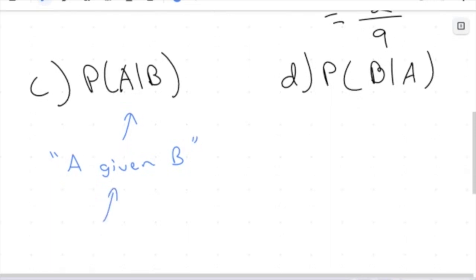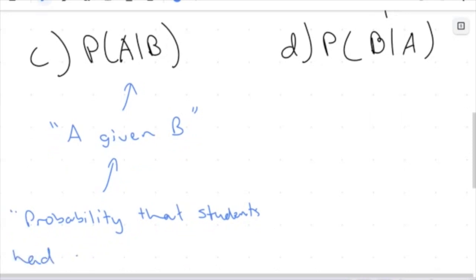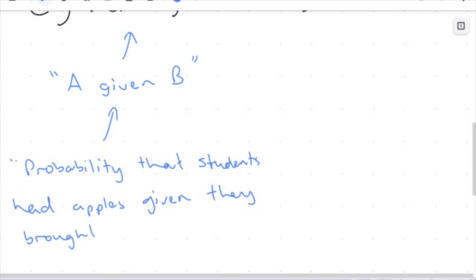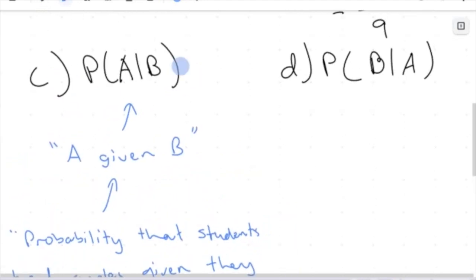Written out the long way: the probability that students had apples given they brought bananas to school. I've made this long-winded because we want to really break down this information, since this type of notation can be a little tricky. In the early days, we really want to understand what this is asking us.